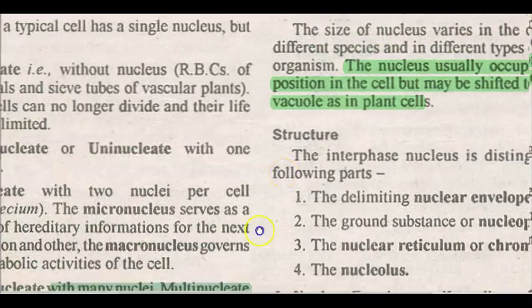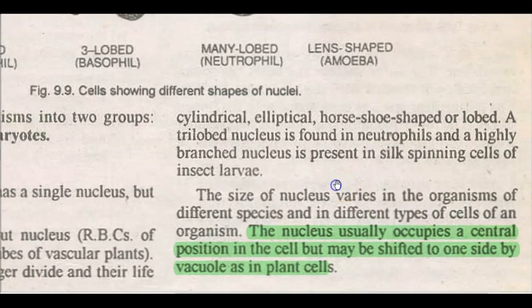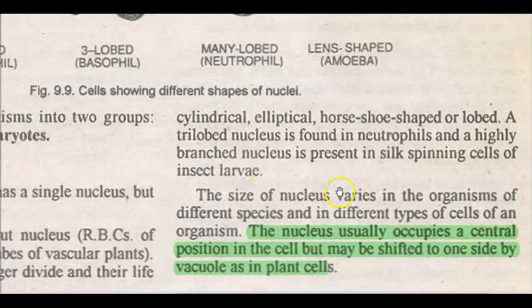The other points are related to the shape and size of the nucleus. Nuclei are generally round in shape; however, the shape differs based on cell type. Sometimes they can be cylindrical, elliptical, horseshoe-shaped, or lobed. Multi-lobed nuclei are also present — for example, trilobed nuclei are present in neutrophils. A highly branched nucleus is present in the silkworm, found in the spinning cells of the insect larva.